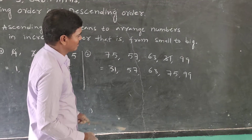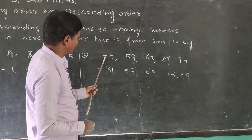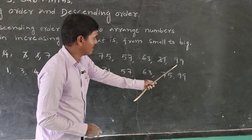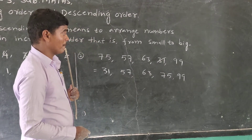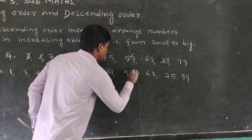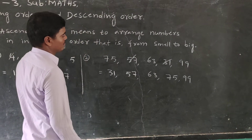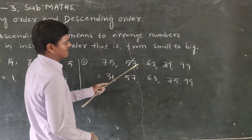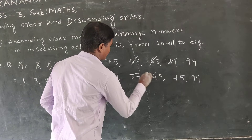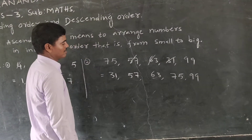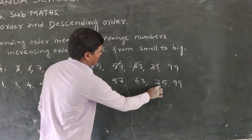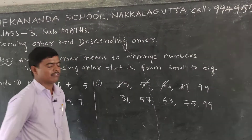31 is completed. From the remaining — 75, 57, 63, 99 — the second smallest number is 57. Next, from 75, 63, 99, the smallest is 63. Then 75, and finally 99.